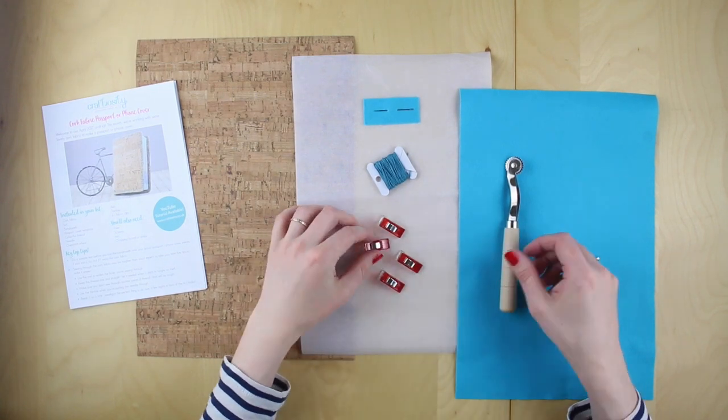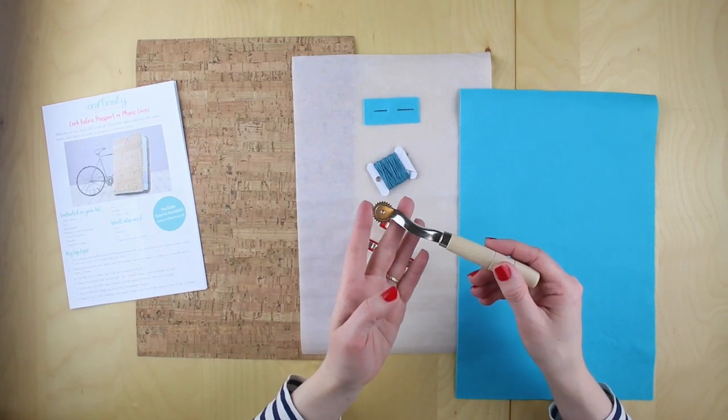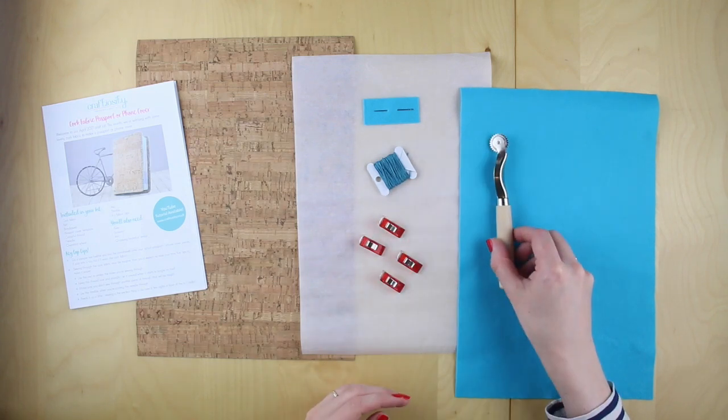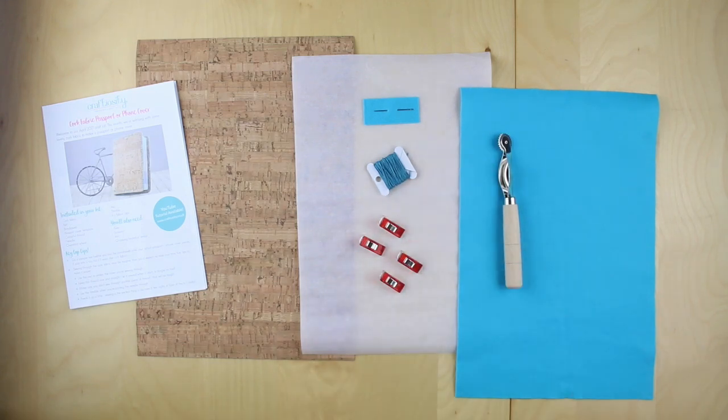They just join all the pieces together while you're working on them and this is an overstitch wheel which we'll use to do the even stitches. If you've bought one of our kits you'll also find a thimble and an awl.